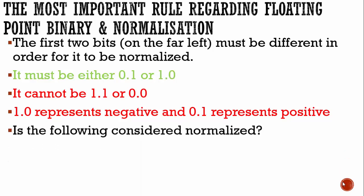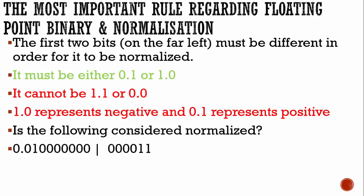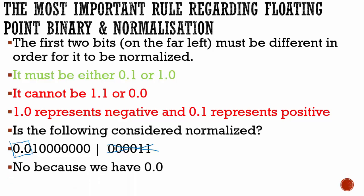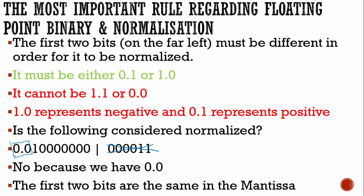Let's take a look at this example. It has a mantissa and exponent, and we're going to determine if it's normalized. When looking at your mantissa and exponent to see if it's normalized, you don't need to worry about the exponent — all you need to worry about are the first two bits in the mantissa. The decimal goes between the first two bits on the left-hand side. We see 0.0, and it's not normalized because we have 0.0. In order for it to be normalized, it must be 0.1 or 1.0. Because the first two bits are the same, it is not normalized.